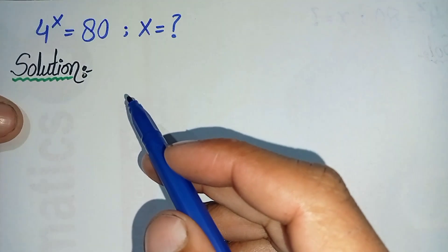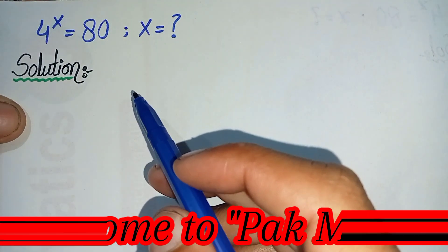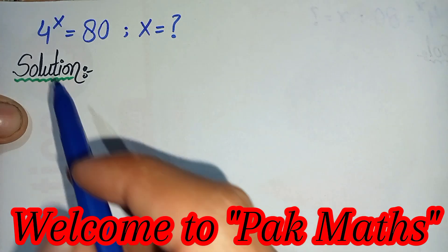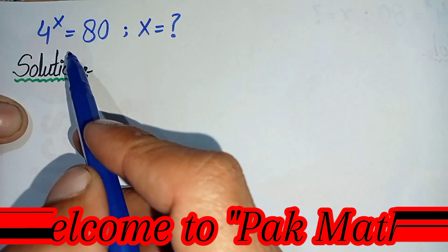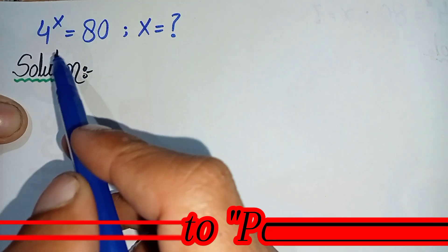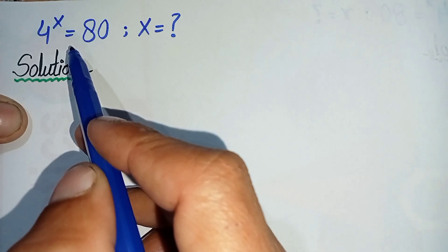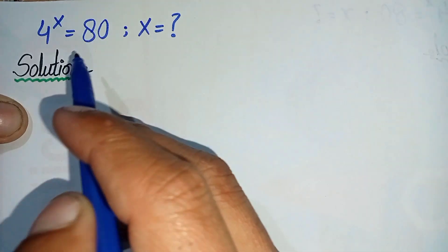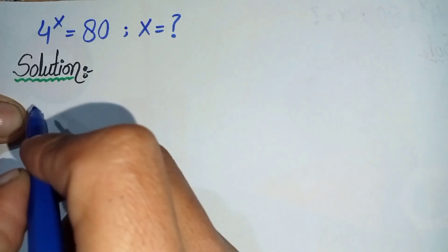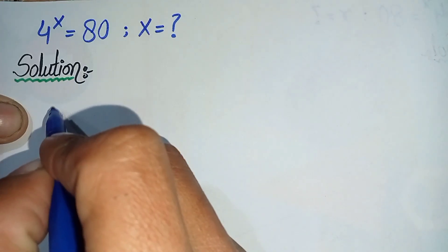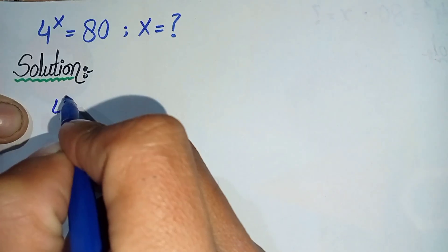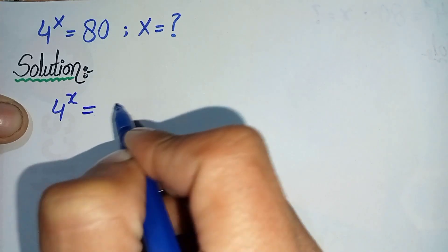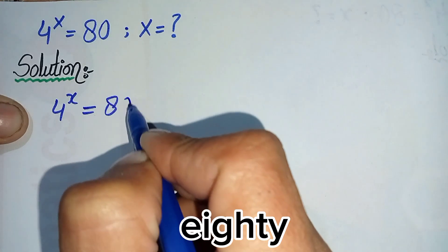Hello everyone, welcome to Park Maths. In this video I'm going to solve a nice exponential math problem. First we will write the solution and then we will rewrite this question. The question is: 4 raised to the power x is equal to 80.